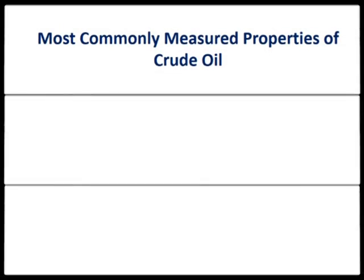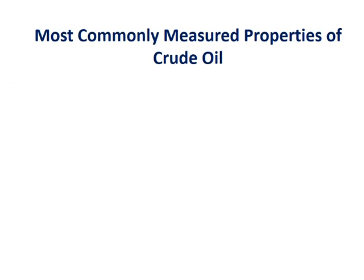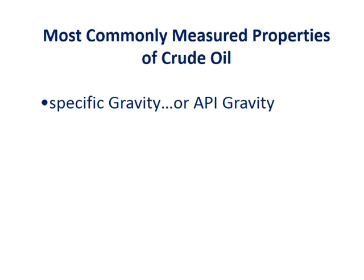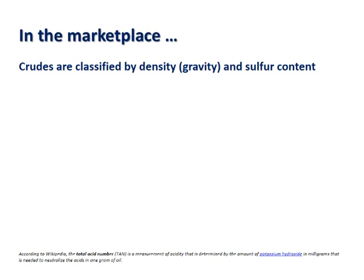Let us look at the most commonly measured properties of crude oil: specific gravity, or API gravity, viscosity, color, and odor.